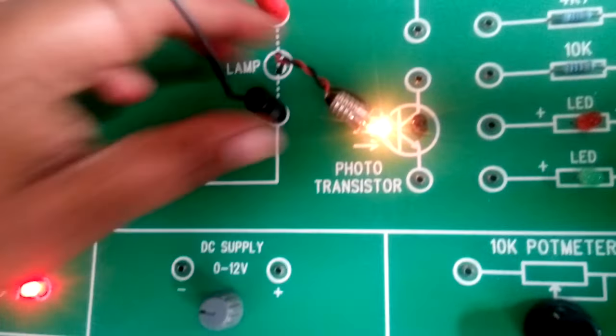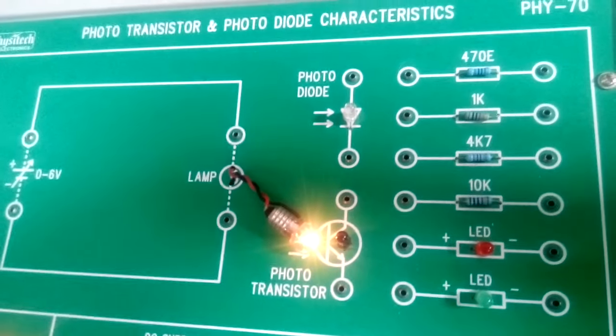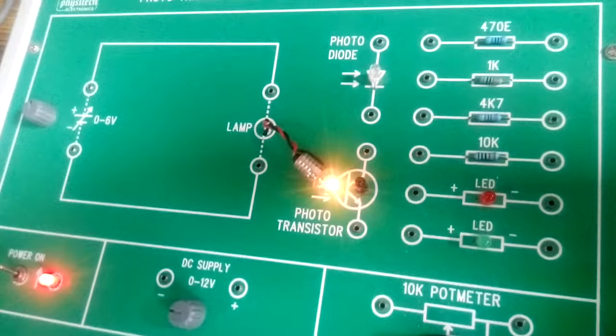After adjusting the voltage, remove the multimeter across these two points. Take three connecting wires.